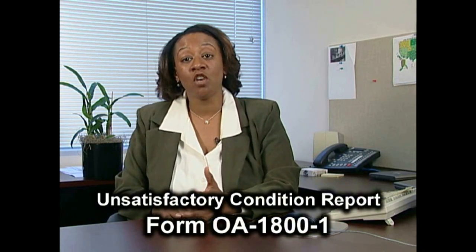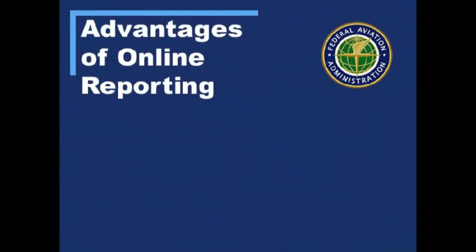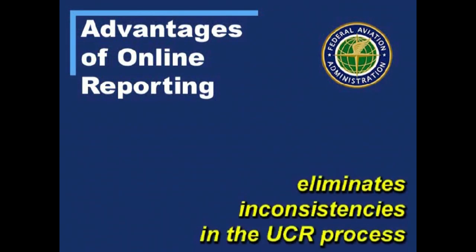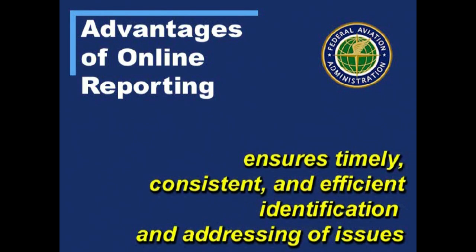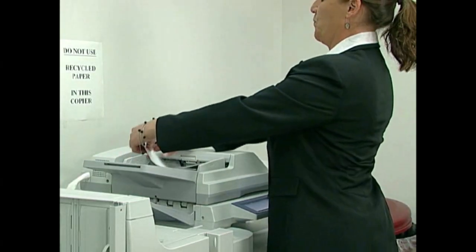If you've established that a UCR should be submitted, you can use form OA-1800-1 on the FAA intranet. The automated online submission eliminates inconsistencies in the UCR process and ensures that unsatisfactory conditions are identified and addressed in a timely, consistent, and efficient manner. If you don't have access to the intranet, you can also photocopy form OA-1800-1 and send it to your supervisor or UCR coordinator. Let's get started.